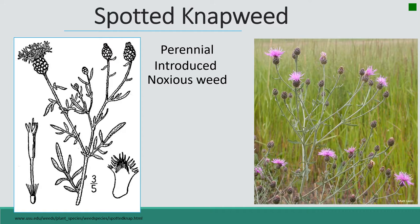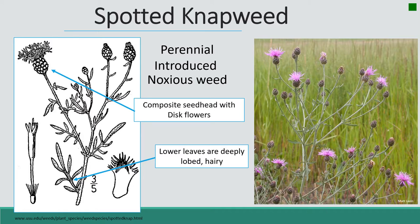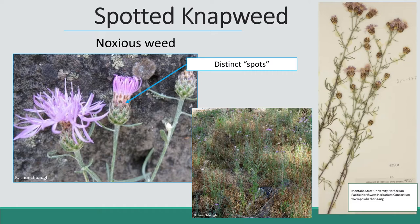The next plant is spotted knapweed, a perennial introduced noxious weed. Some characteristics that help you identify it include a composite seed head with disc flowers. The lower leaves are typically deeply lobed and hairy. One reason it's called spotted knapweed is because it has distinct spots on the head of the flower — these are bracts, each with a black tip directly under the flower head, which is where you see the spots.